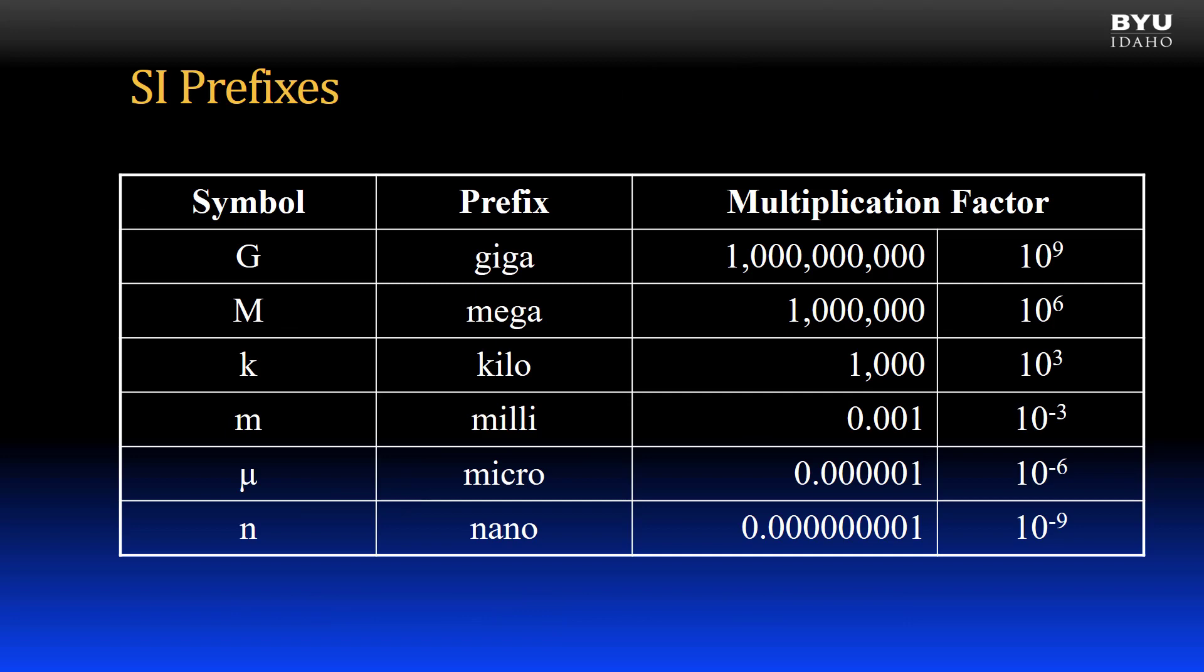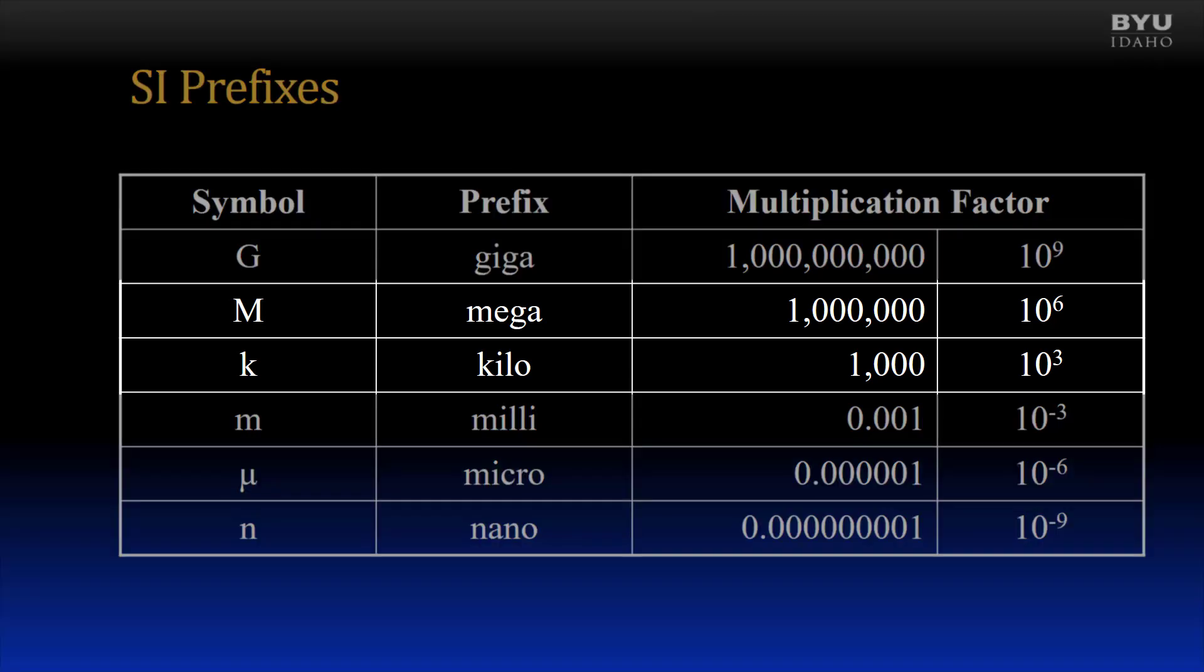Something to note when working with the metric system is the prefixes that are available. The most common ones that we will use in statics are capital M for mega and lowercase k for kilo. These prefixes represent powers of 10 to the sixth and 10 to the third respectively.